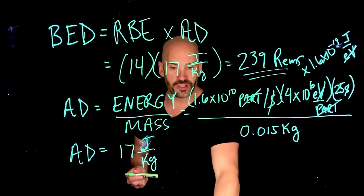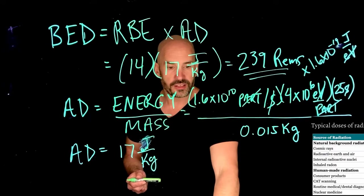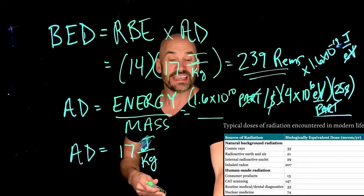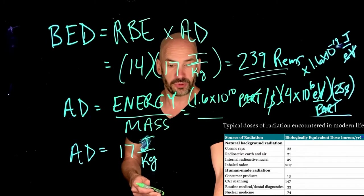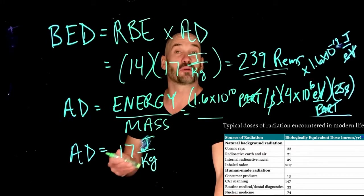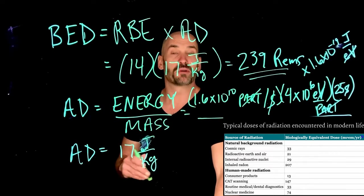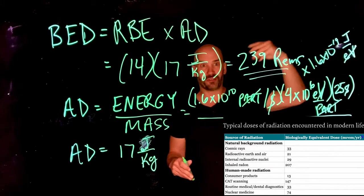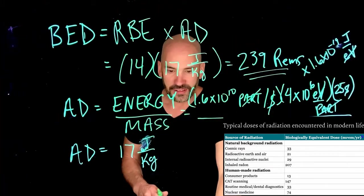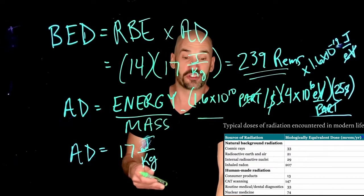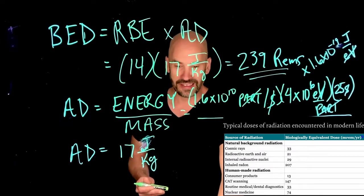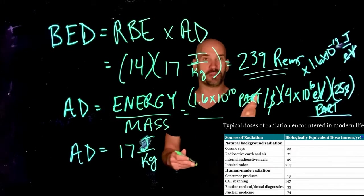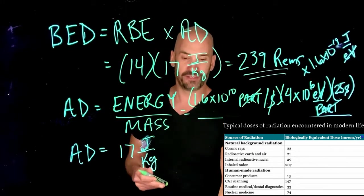You can see in this next picture here what are some classic biologically equivalent doses that you would get in a year. For example, cosmic rays alone, you'll get 33 millirems per year just by these incidental cosmic rays that happen to come at us from outer space. The radioactive earth, just our dirt will give us 21 millirems per year. Inhaled radon gives us 207, so this kind of tells us why the issue that came up in the problem in the last set of lectures is an issue.